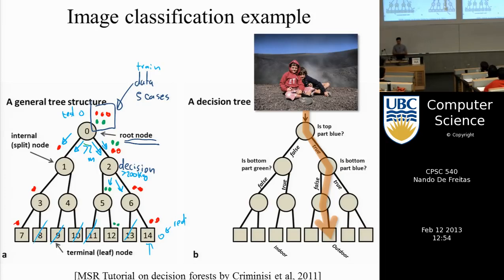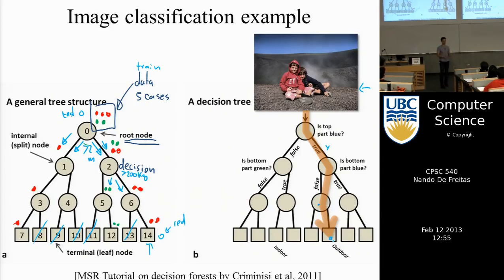Here's another example where you have an image as input. Your question might be: is the top of the image blue? If yes, you ask the next question: is the bottom part of the image blue? If not, the image goes this way and eventually arrives at a leaf where all outdoor scene images are likely to arrive, following these decisions.